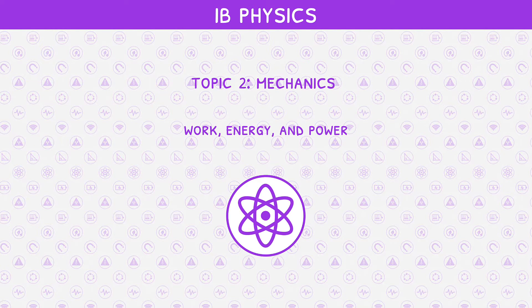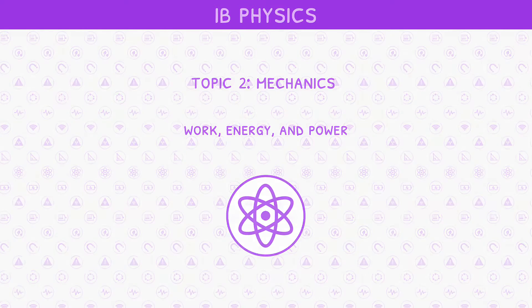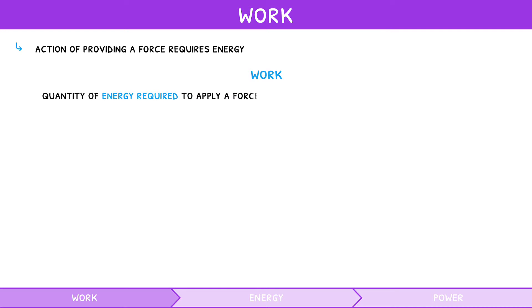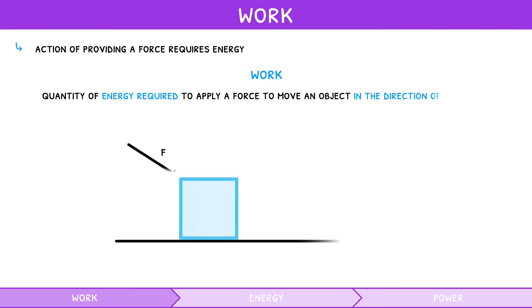In our second IB Physics Topic 2 video, we discussed how forces interact with objects and with each other. But the action of providing a force requires energy, called work. This is defined as the quantity of energy required to apply a force to move an object in the direction of the force, measured in joules.